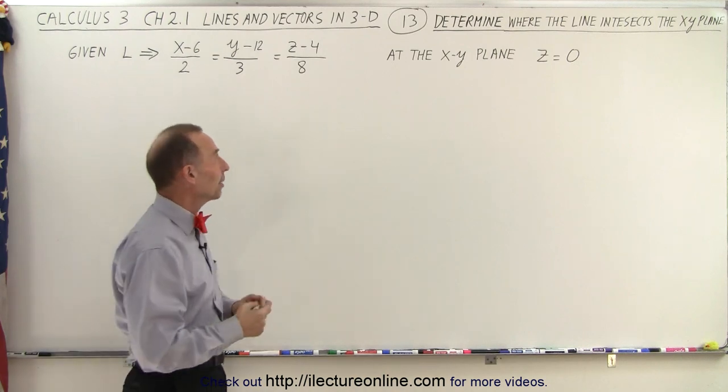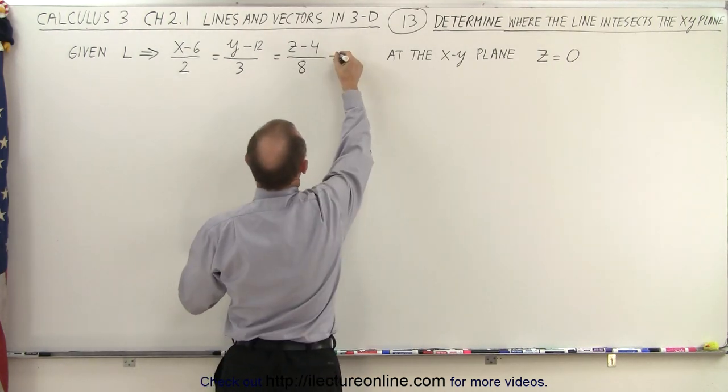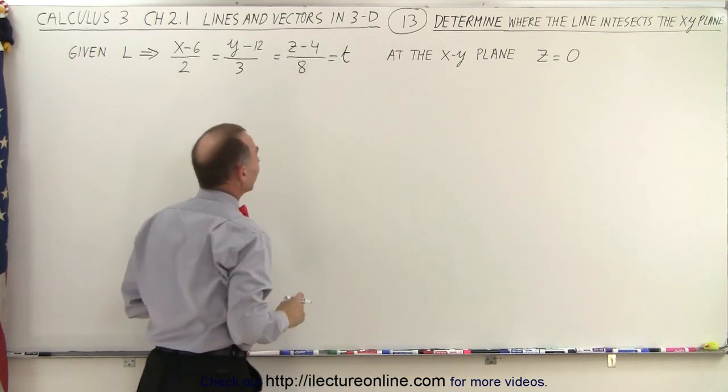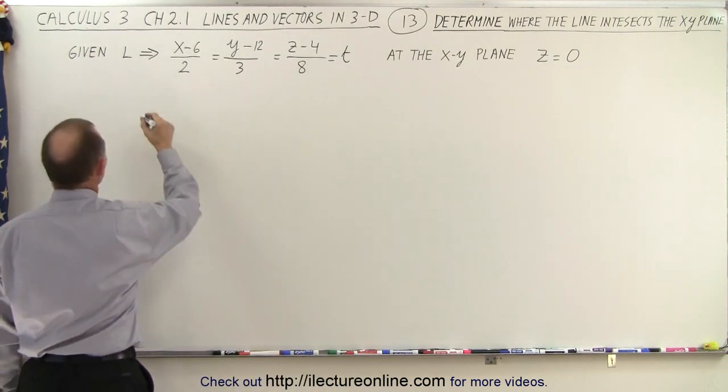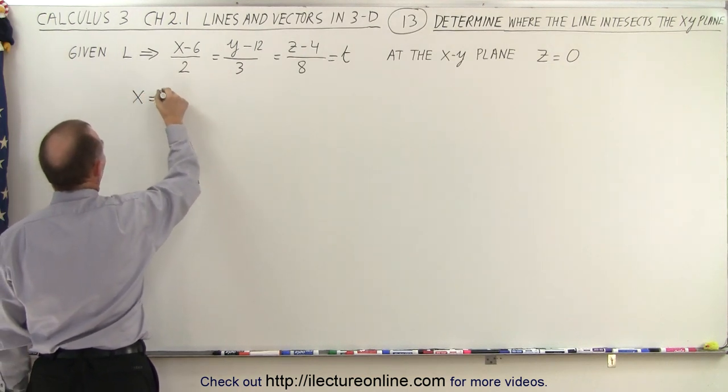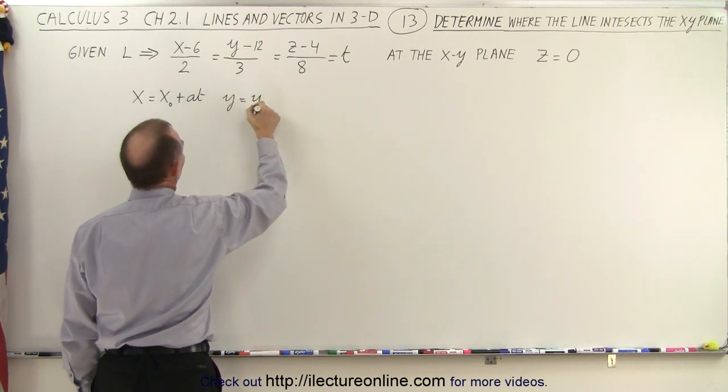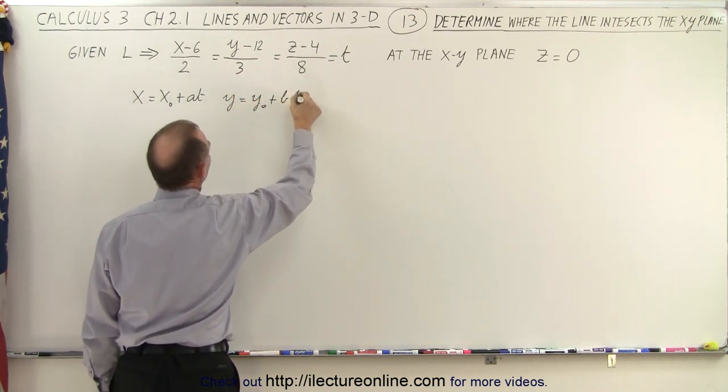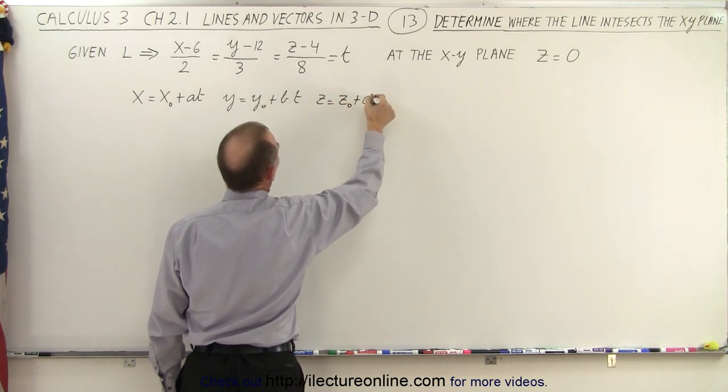We're also going to use the parametric equation. So we're going to take this and set that equal to t, then realizing the general form of the parametric equations where we can say that x equals x sub 0 plus at, y equals y sub 0 plus bt, and z equals z sub 0 plus ct.